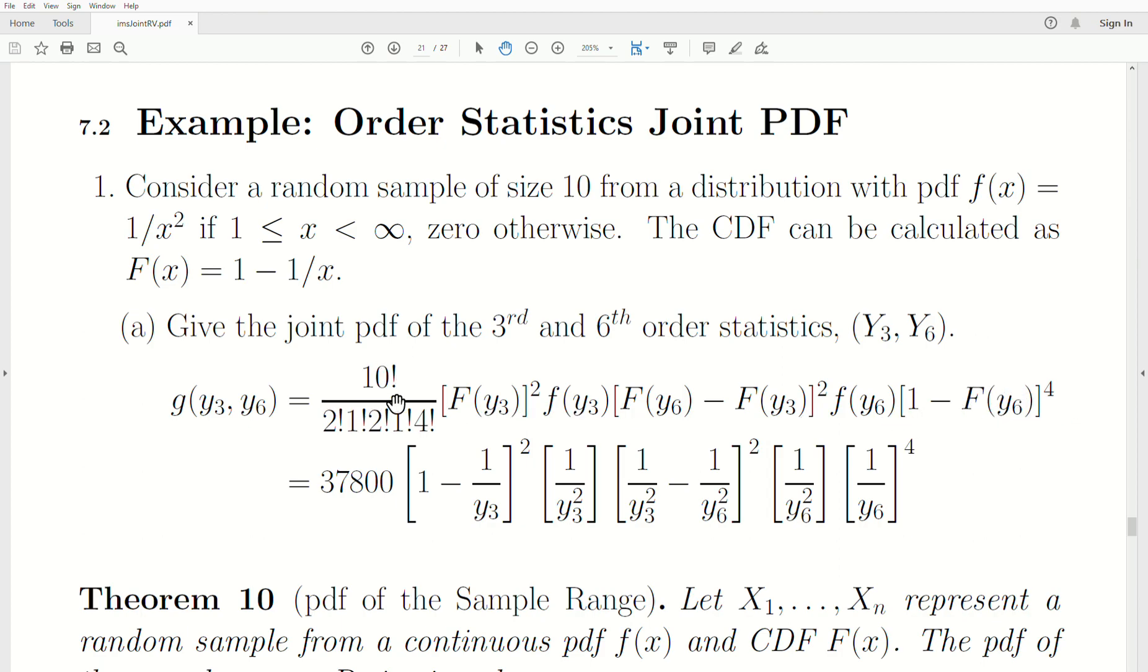Then this is the multinomial coefficient, and what's down below are the exponents: 2, 1, 2, 1, 4. And so this is the PDF for the third and sixth order statistic, and that to me is just mind-bogglingly cool.